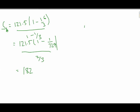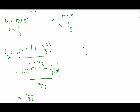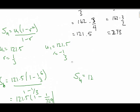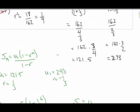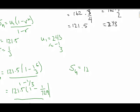Again, if I check the other scenario, using this scenario, where I have a different U1, I go S sub 6, and I get 243, 1 minus a negative one-third to the sixth over 1 minus a negative one-third.